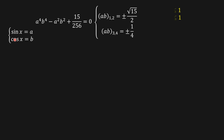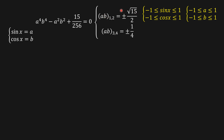Remembering our condition that a and b are each bounded between -1 and 1, the value ab = ±√15/2 is greater than 1 and does not satisfy our condition. Similarly, the negative root gives imaginary solutions, which is not what we're looking for. Therefore the only valid value is ab equals plus or minus one over four.